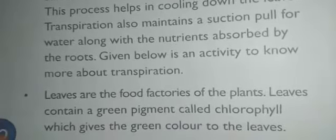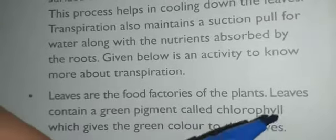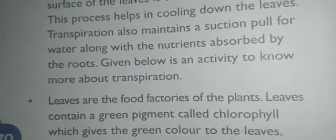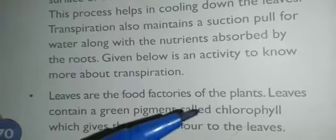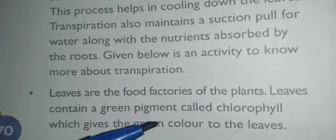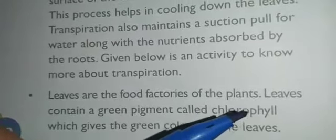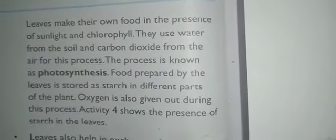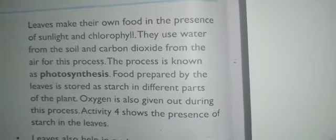Most leaves are green in color due to the presence of a green color pigment called chlorophyll. Leaves make their own food in the presence of sunlight and chlorophyll, which is why the leaf is called the kitchen of the plant.